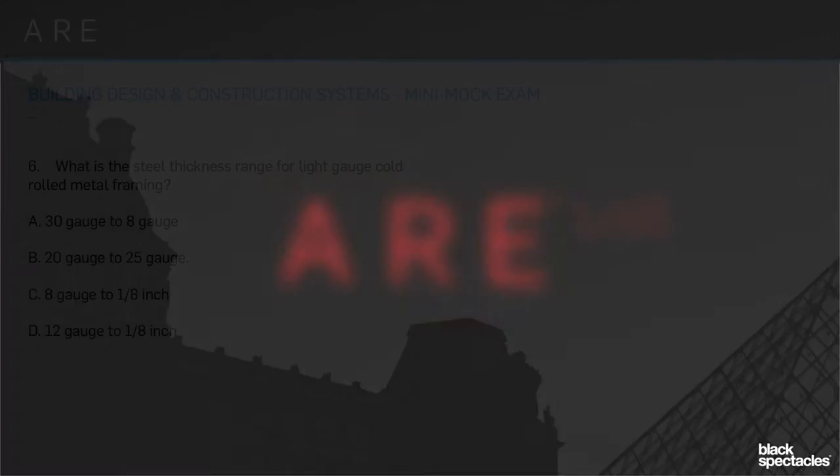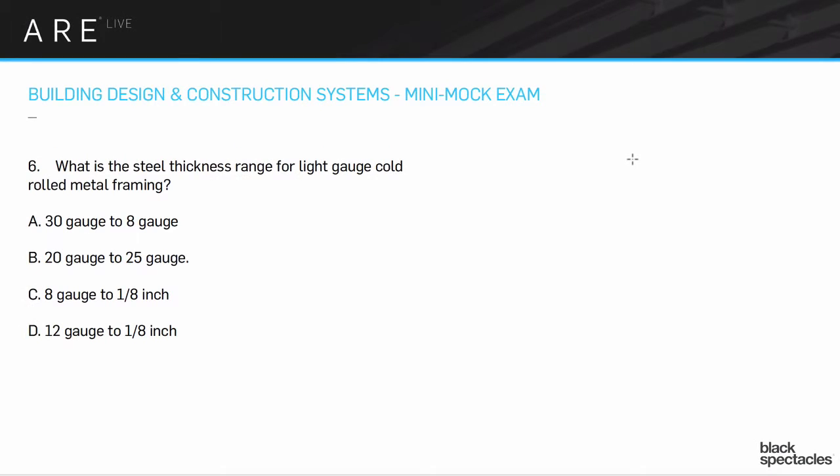Number six: What is the steel thickness range for light gauge cold rolled metal framing? This is when you're using metal studs, metal joists, that kind of thing. It's not structural steel, which would be wide flanges and channels and things like that. This is those very thin folded forms that make up the metal studs.